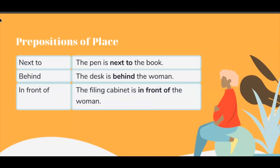Prepositions of place. Next to: The pen is next to the book. Behind: The desk is behind the woman. In front of: The filing cabinet is in front of the woman.